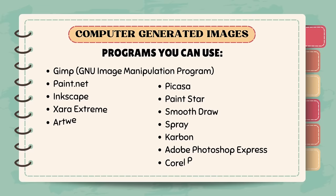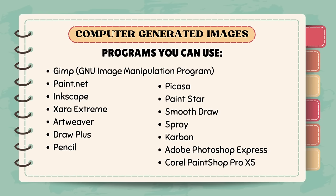There are scaled-down versions of such programs specifically developed for use on smaller handheld units like your personal tablet or Android phone. These enable you to perform virtually all the tasks that a program like Illustrator performs, almost literally in the palm of your hand — many at a fraction of the cost or even for free. Among such programs are GIMP (GNU Image Manipulation Program), Paint.net, Inkscape, Zara Extreme, Artweaver, Draw Plus, Pencil, Picasa, Paintstar, Smooth Draw, Spray, Carbon, Adobe Photoshop Express, and Corel Paint Shop Pro X5.